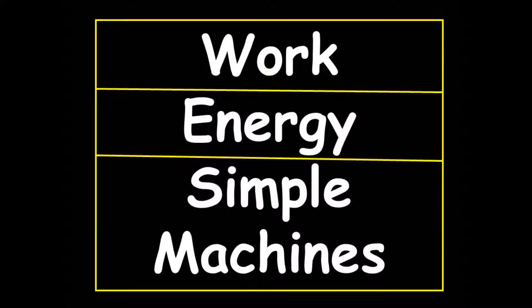When we talk about energy, we'll talk about kinetic energy, which is measured in joules. We'll talk about potential energy, also measured in joules. We'll talk about work, which is also measured in joules. A joule is a kilogram meter squared per second squared. A Newton was a kilogram meters per second squared, and momentum was kilogram meters per second. A joule is a kilogram meter squared per second squared. I'll go over this again in the course of the video.